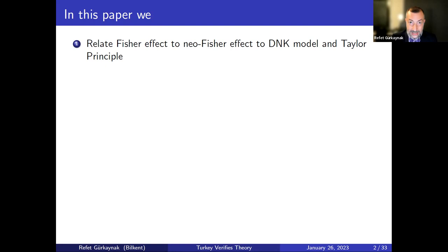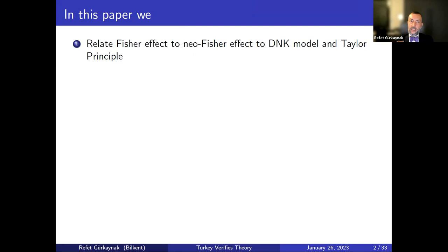The New Fisherian idea isn't like MMT — there is actually reasonable theory behind it. There is a case where this can happen. But it doesn't have to happen, and in fact when it does happen the causality does not go from having lowered the nominal rate — it goes from having credibly lowered the inflation target, and therefore being able to lower the nominal rate with it. The good question is: what happens if you try and you fail?